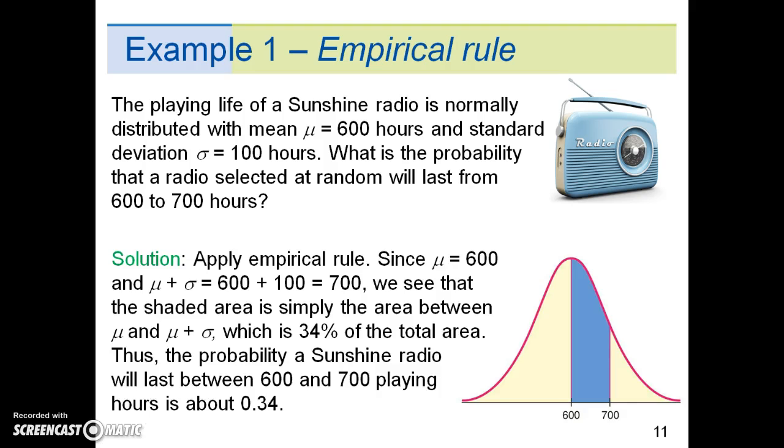The solution is as follows. We need to apply the empirical rule. Since mu equals 600 and mu plus sigma equals 600 plus 100 to total 700, we see that the shaded area is simply the area between mu and mu plus sigma, which, if you go back a slide to the empirical rule, is 34% of the total area. Thus, the probability a Sunshine radio will last between 600 and 700 playing hours is about 0.34 or 34%.